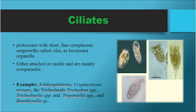Ciliates are protozoans with short, fine cytoplasmic outgrowths called cilia as locomotor organelles. They are either attached or motile and are mainly ectoparasitic. Examples are Ichthyophthirius, Cryptocaryon irritans, the trichodinids — Trichodina spp., Trichodinella spp., and Tripartiella spp. — and Brooklinella spp.